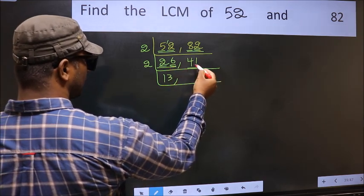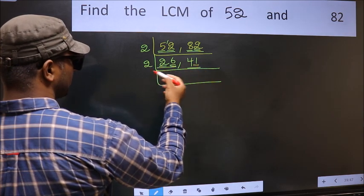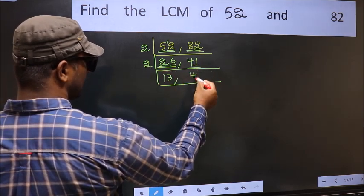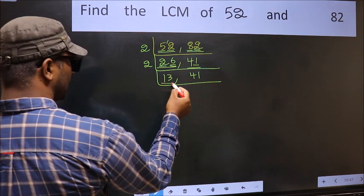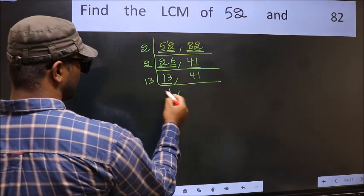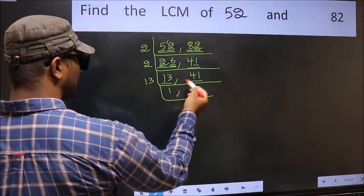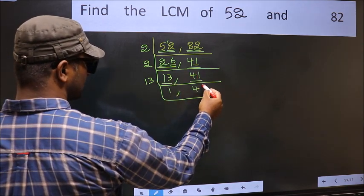Now the other number 41. Last digit 1, not even. So this is not divisible by 2. So we write it down as it is. Now here we have 13. 13 is a prime number. So 13 once 13. The other number 41. So we write it down as it is.